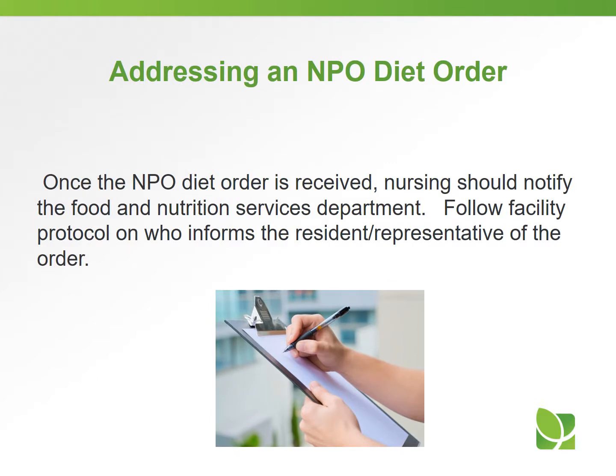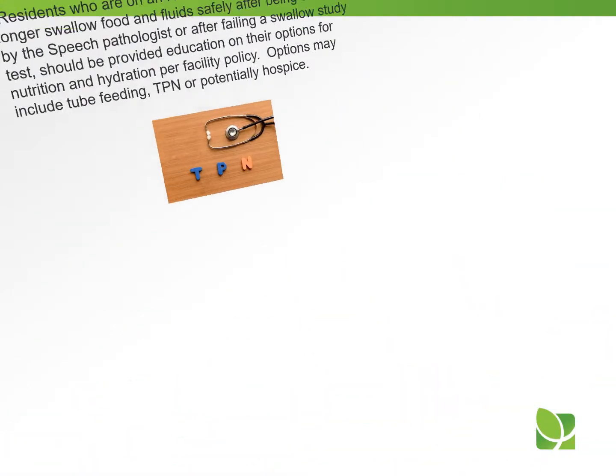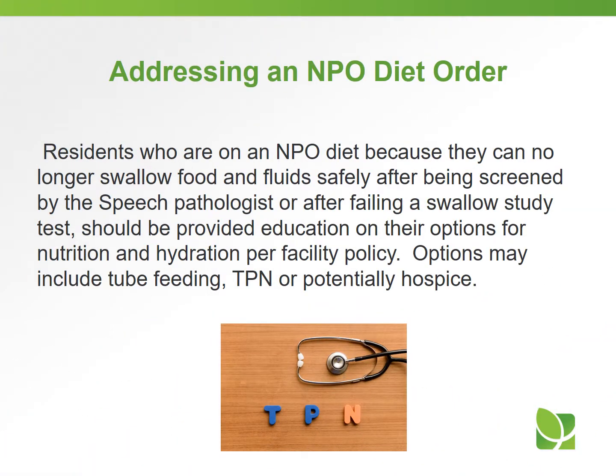Addressing an NPO diet order: once the NPO diet order is received, nursing should notify the Food and Nutrition Services Department. Follow facility protocol on who informs the resident or representative of the order. Residents who are on an NPO diet because they can no longer swallow food and fluids safely — after being screened by the speech pathologist or after failing a swallow study test — should be provided education on their options for nutrition and hydration per facility policy. Options may include tube feeding, TPN, or potentially hospice.